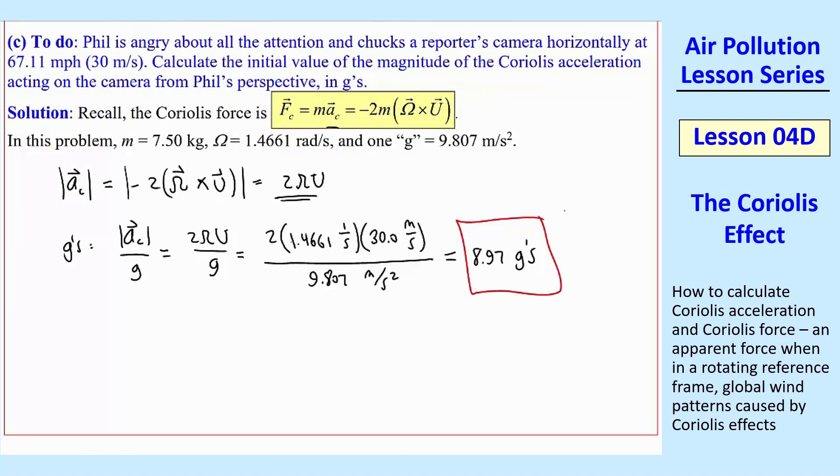And that's a lot, almost 9 Gs. So the acceleration on this camera is going to be about 9 times the acceleration of gravity. And of course, it will veer to the right. So if Phil throws this camera at a person, it's not going to hit the person. It's going to veer to the right, just as the ball veered to the right. And I'll make a final comment on here. Do not confuse Coriolis force with centripetal force, or you might call it centrifugal force.